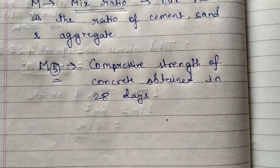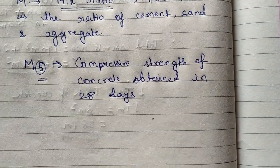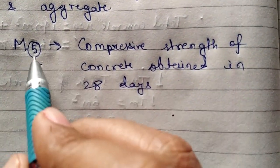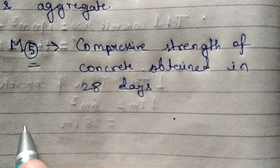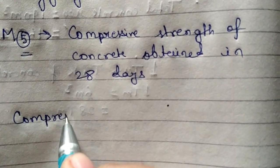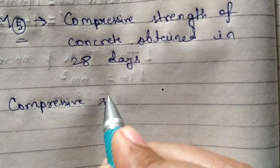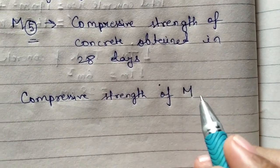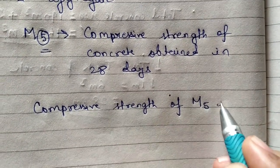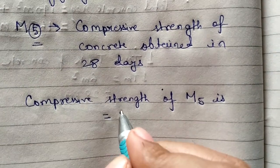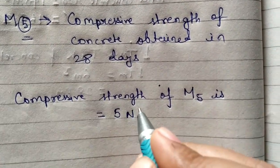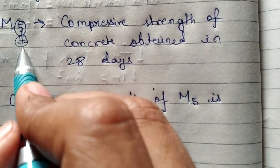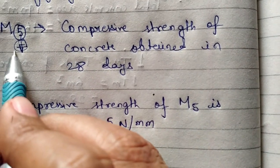Compressive strength is in newton per mm2, it is a standard unit for compressive strength. So what is the compressive strength of M5? Compressive strength of M5 is equal to 5 newton per mm2. This is compressive strength of M5 grade concrete.